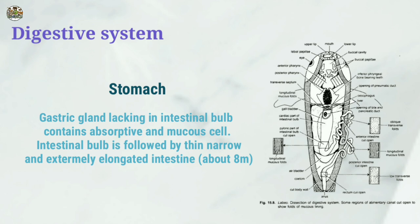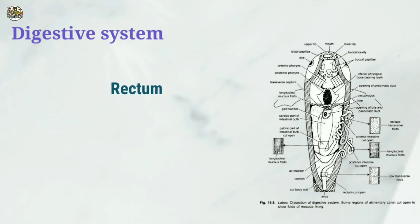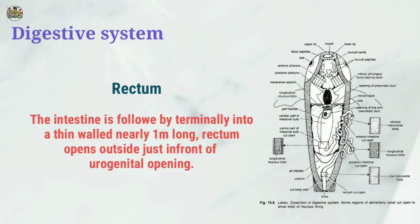The intestinal bulb is followed by a thin, narrow, and extremely elongated intestine, about 8 meters long. This is followed terminally by a thin-walled rectum, nearly 1 meter long. The rectum opens outside through the anus, located just in front of the urogenital opening.